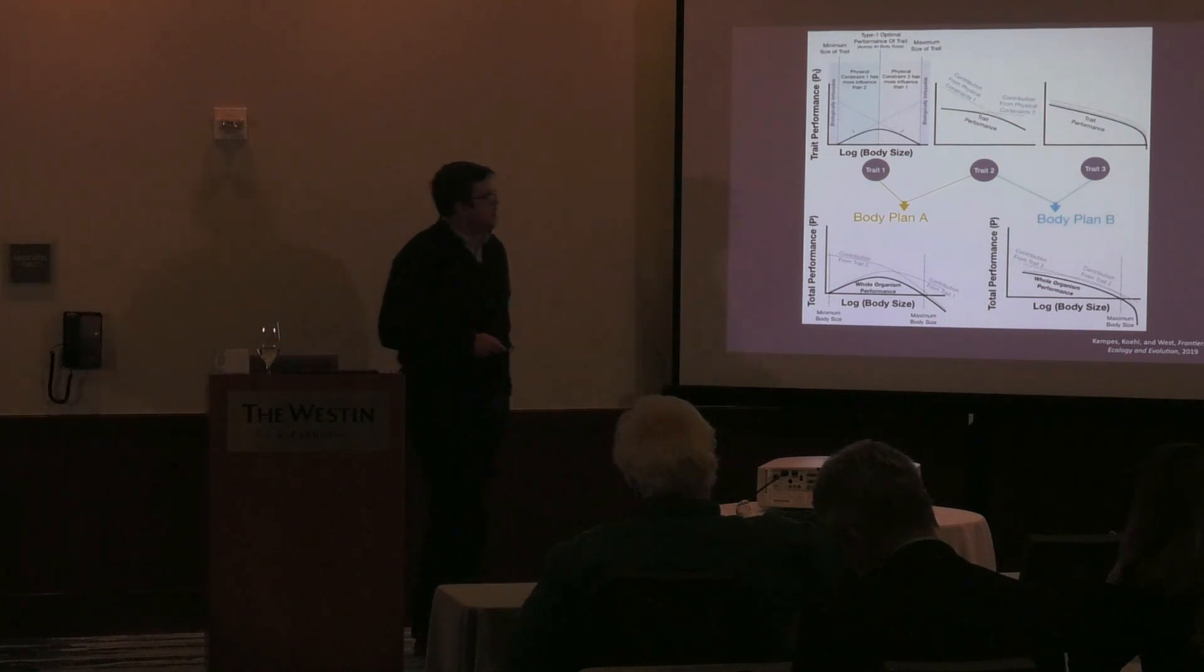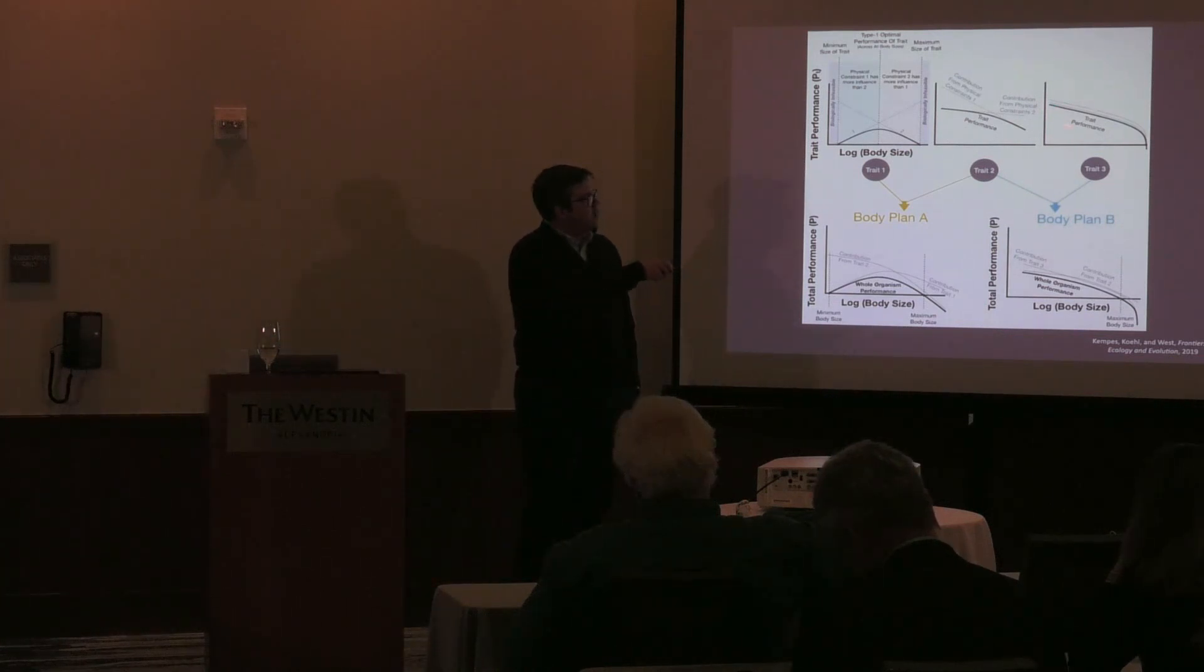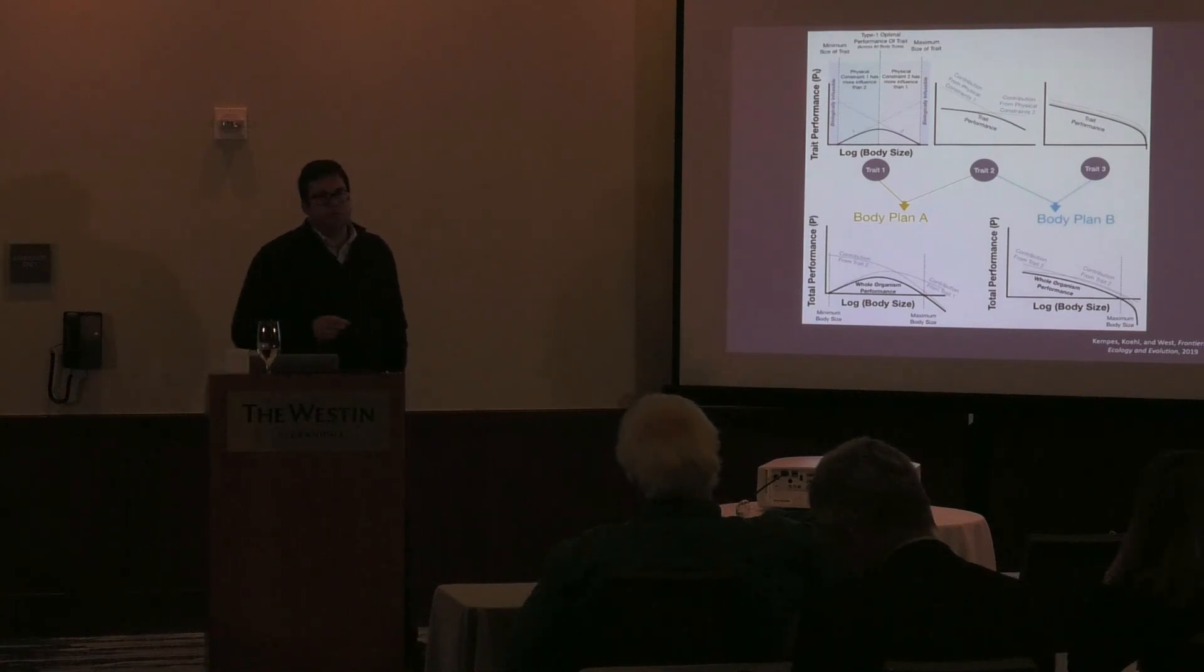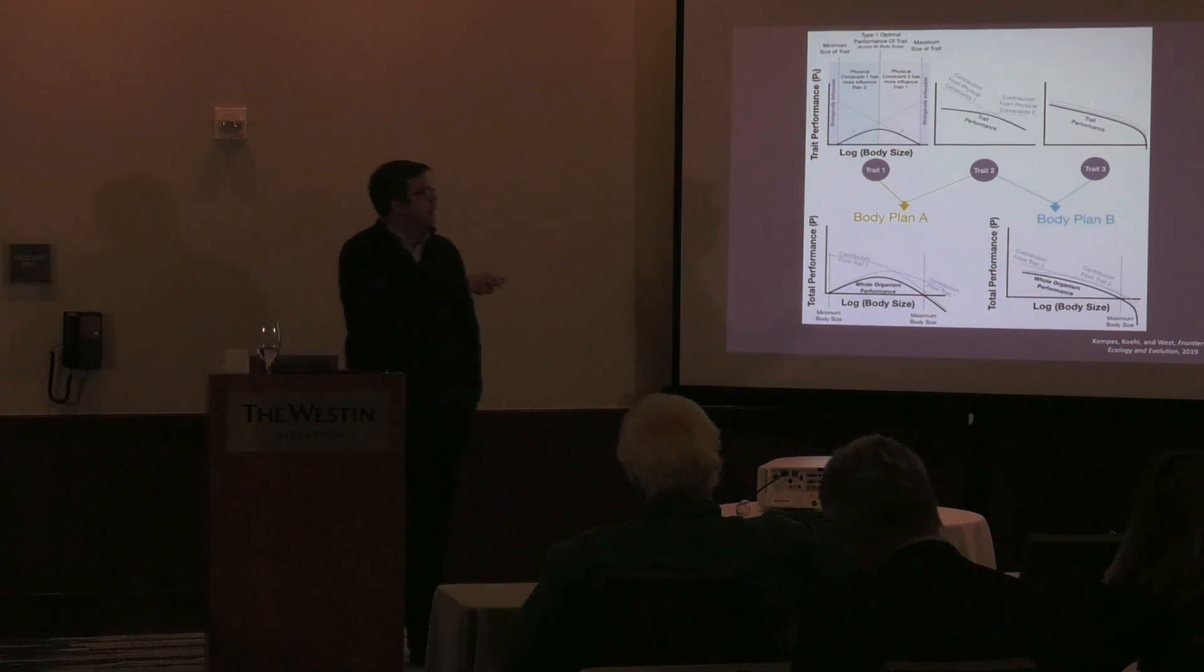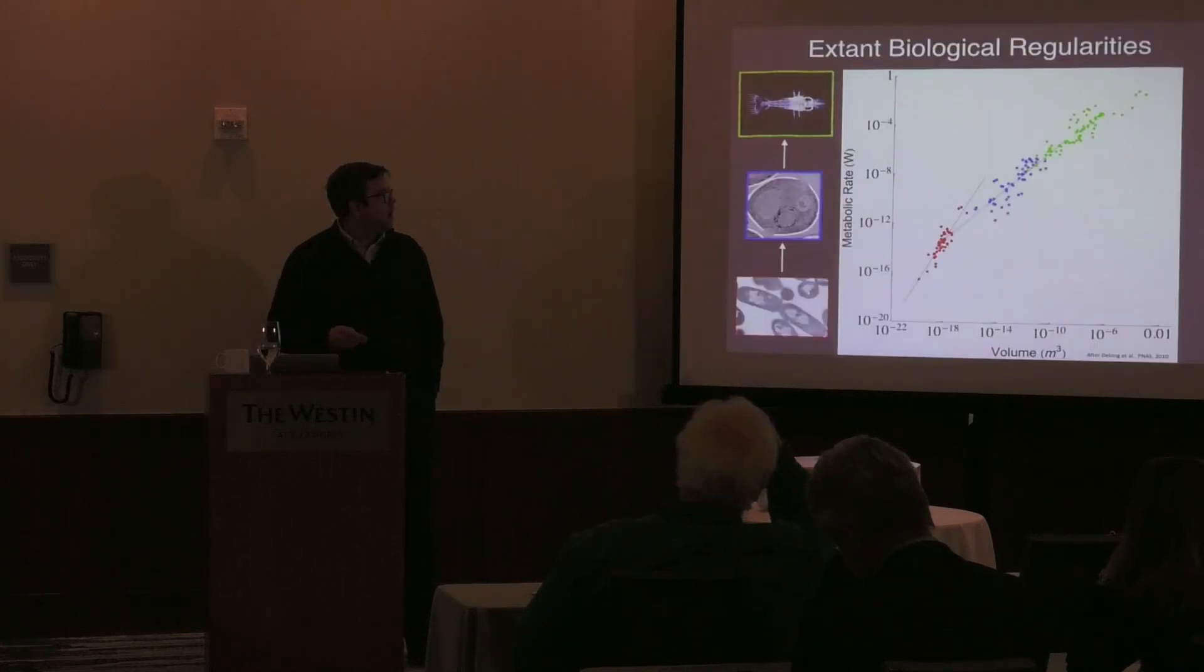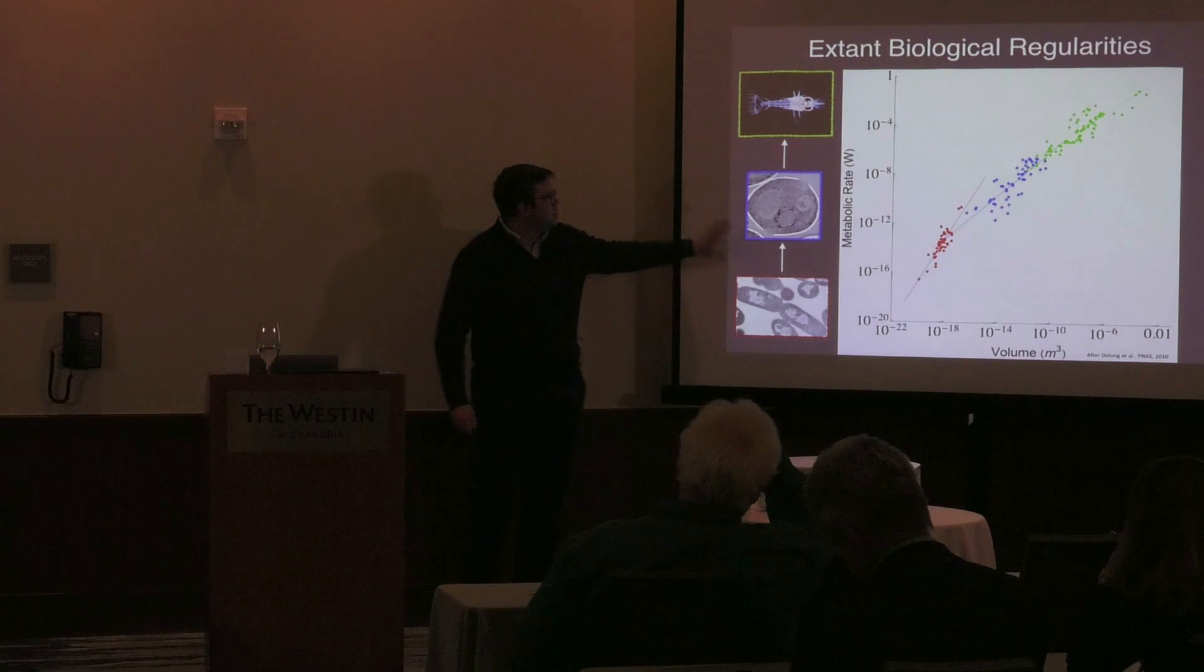The other thing to note about these laws is that when you have a single trait related to a single constraint, there still should be some shift with scale that eventually starts to deviate from say a power law relationship. We should expect asymptotic features to show up as certain constraints become either exponentially limiting or go to zero or something like that. So taken together, we expect that as a function of either changes in size or shifts in architecture, we should see radical shifts in the scaling relationships. That's in fact what we see if we look across some of the major evolutionary transitions in life.